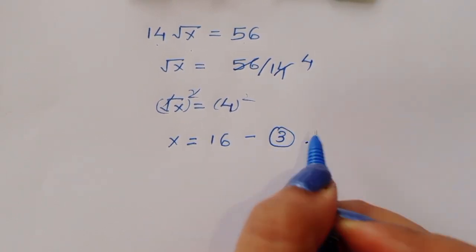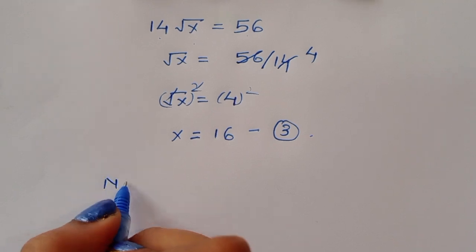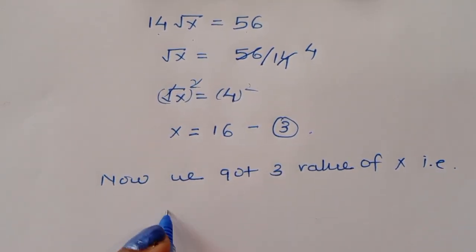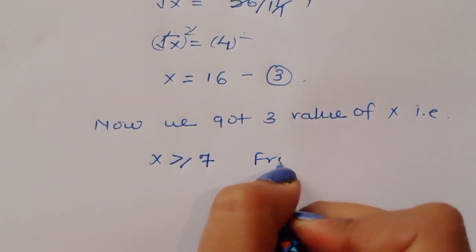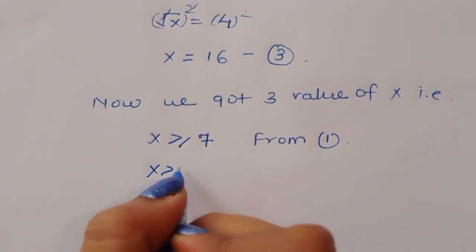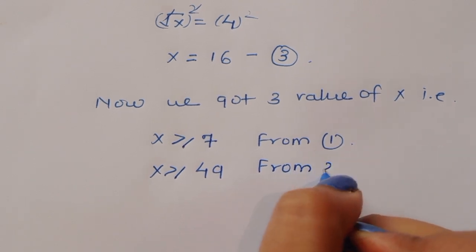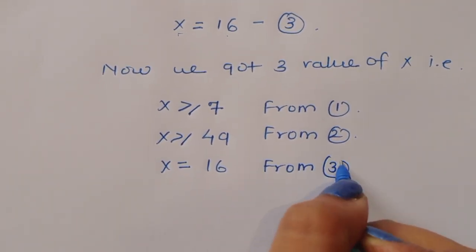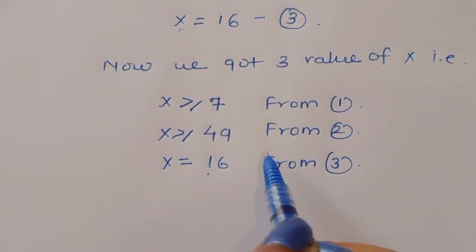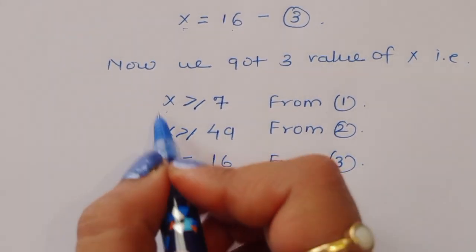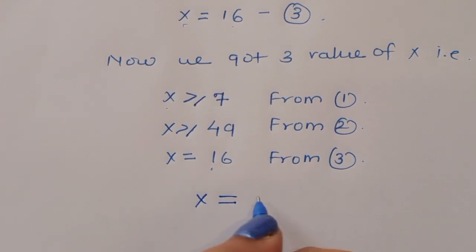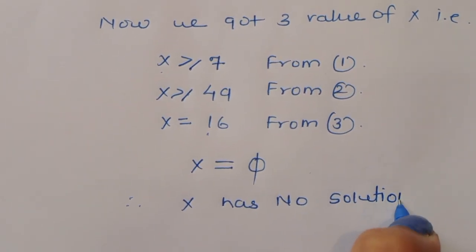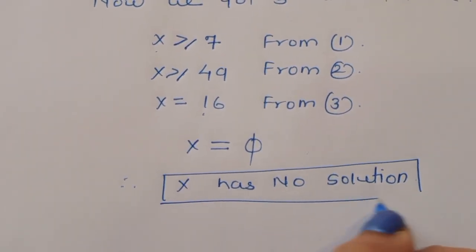Squaring both sides gives x equals 16. This is the value of x from equation 3. So we have three results: from equation 1, x is greater than or equal to 7; from equation 2, x is greater than or equal to 49; and from equation 3, x equals 16. Since x equals 16 does not satisfy x is greater than or equal to 49, x has no solution. This is the solution.